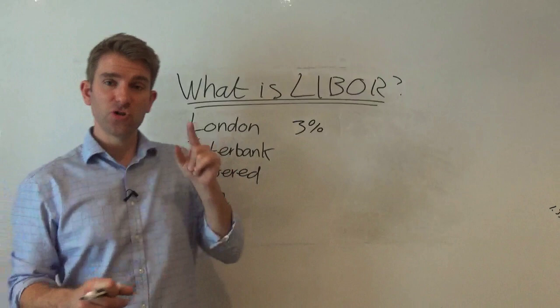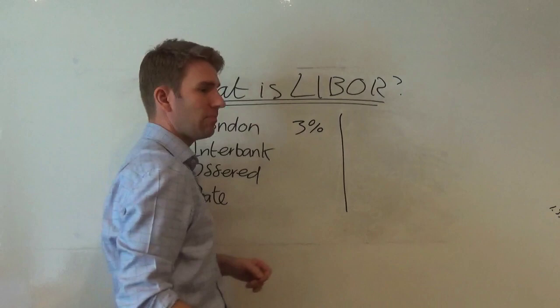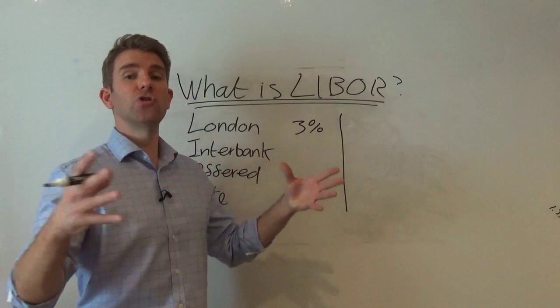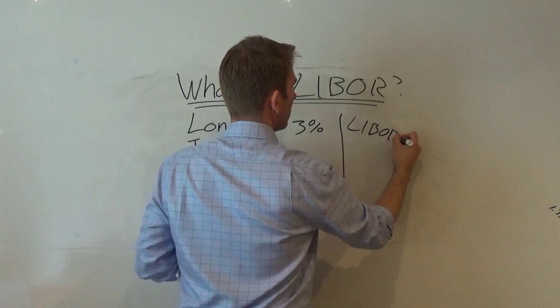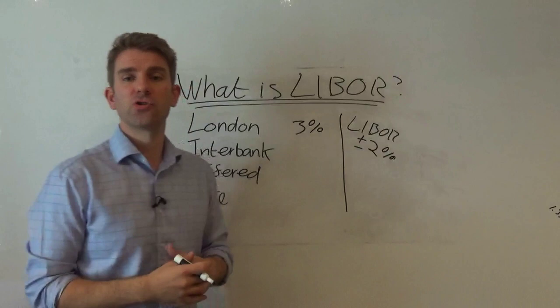So let's say we're trading CFDs. Let's say you're going to your broker, and your broker said, okay, you can trade CFDs on margin, no problem, but we're going to charge you a rate. We're going to charge you LIBOR, and we're going to charge you LIBOR plus or minus, let's say 2%, on overnight charge. That makes perfect sense to me.